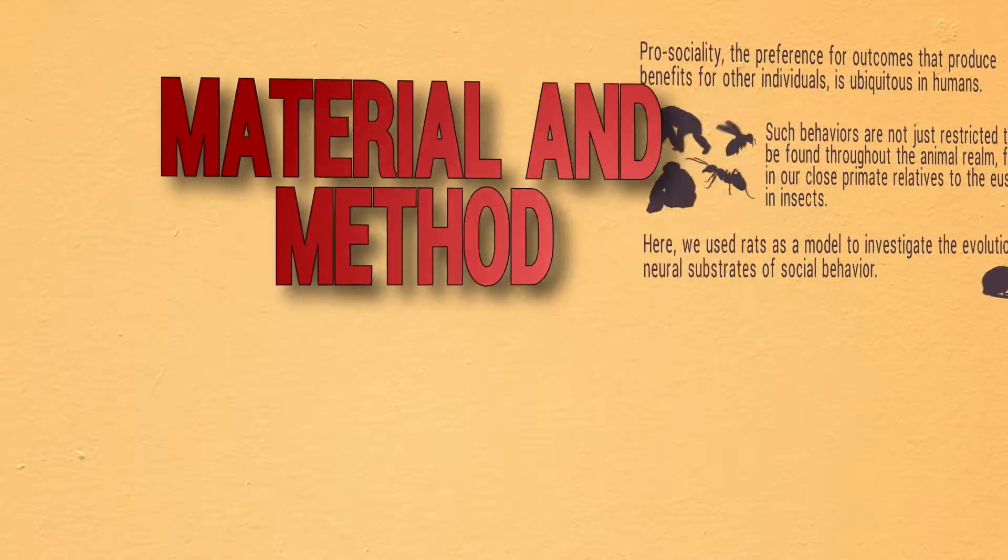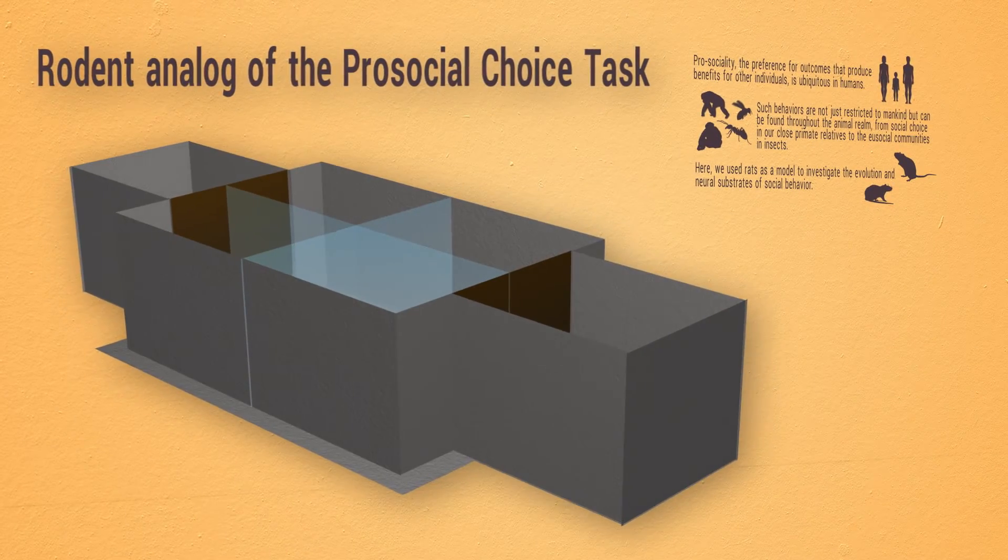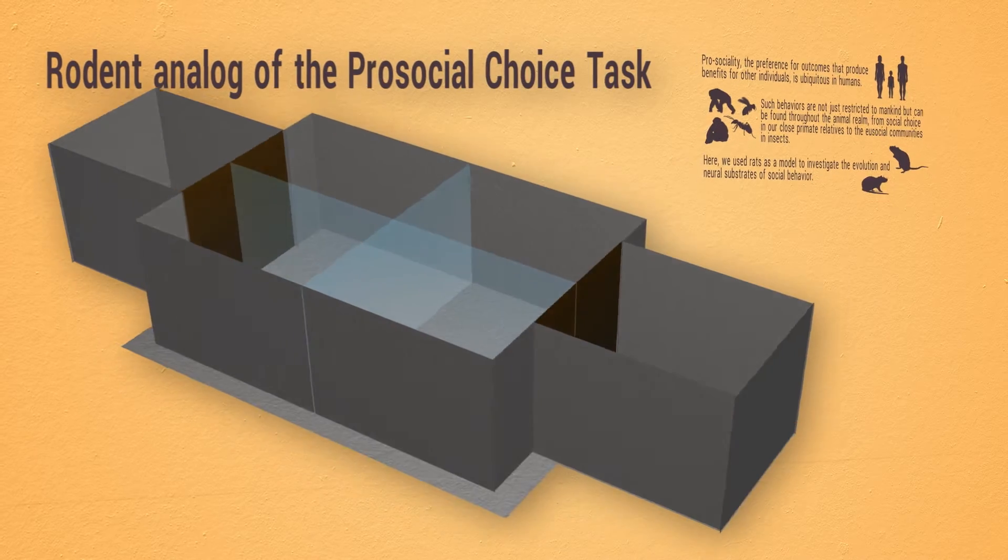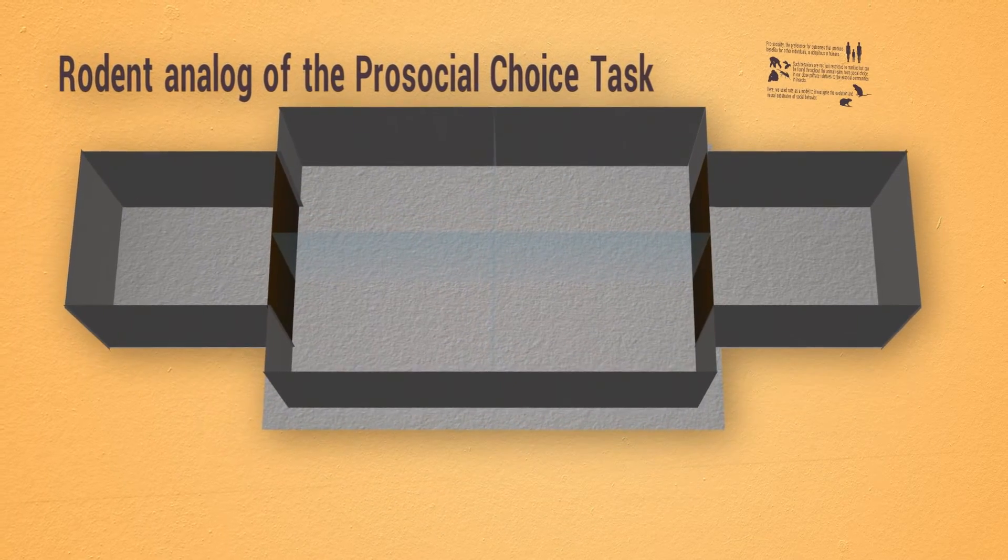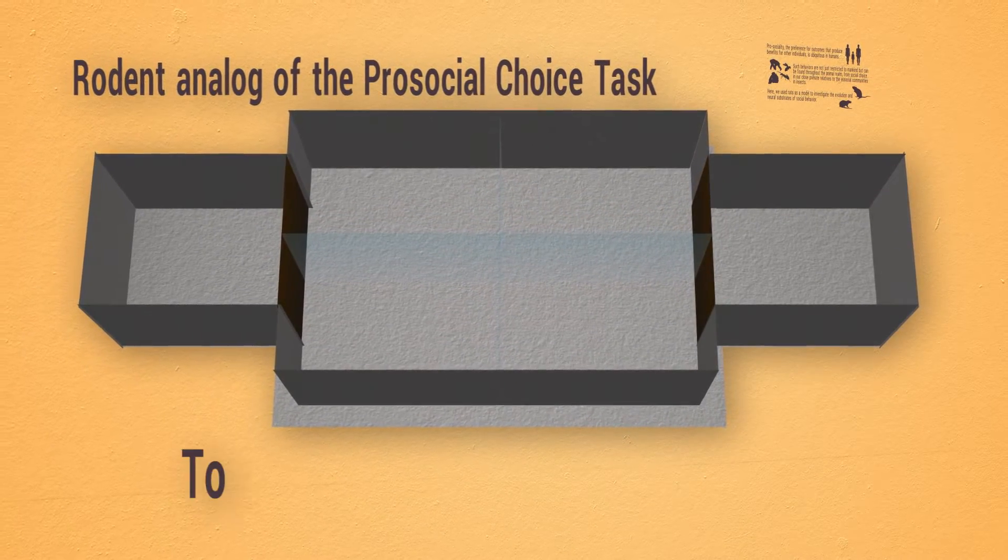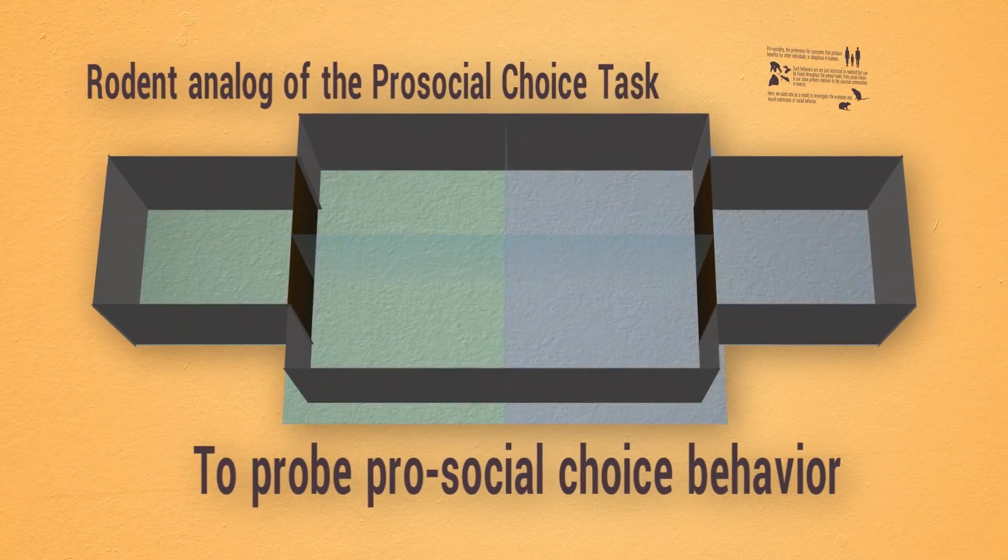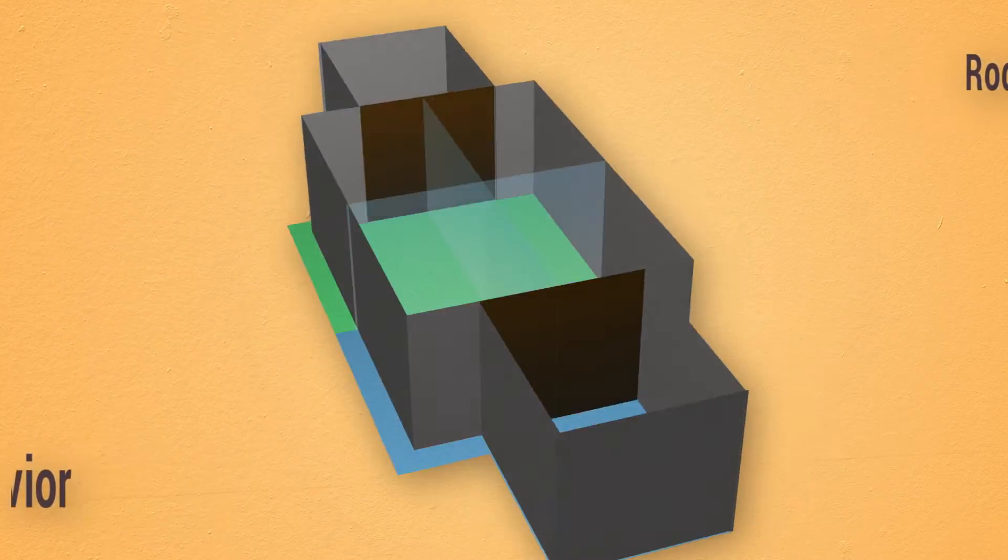We introduced a rodent analog of the prosocial choice task, a simple and standardized behavioral experimental paradigm adapted from a well-established task in primates to probe prosocial choice behavior. Experiments were conducted in a custom-made double T-maze with the maze's main compartments facing each other.